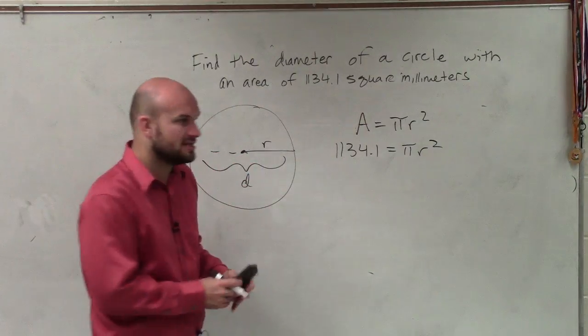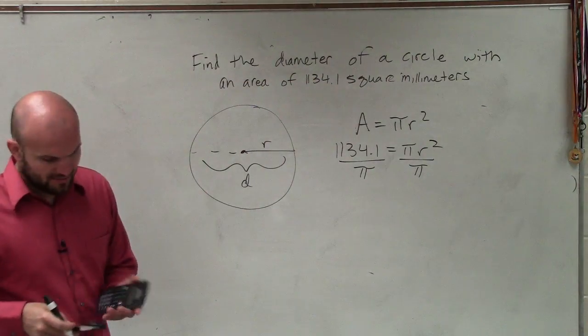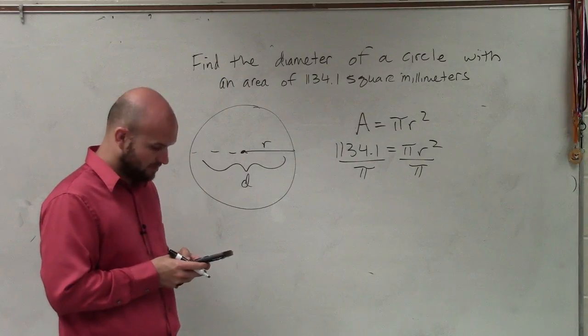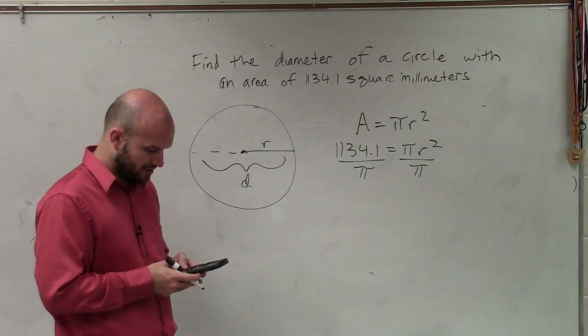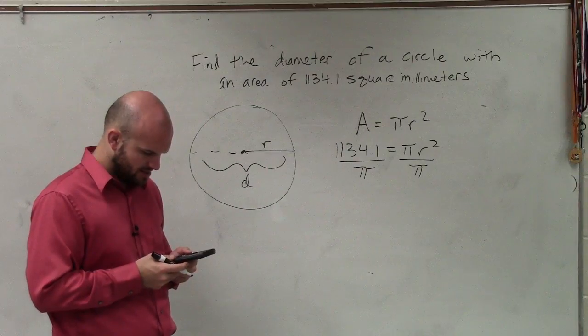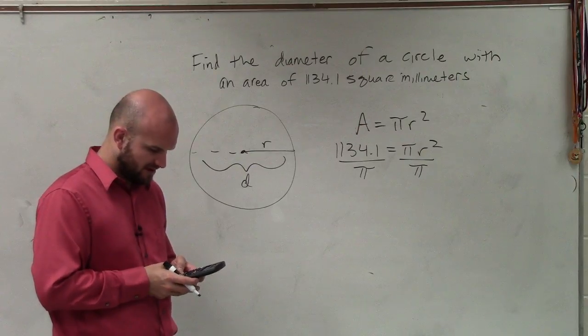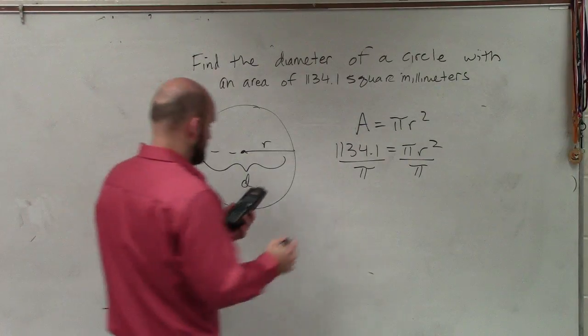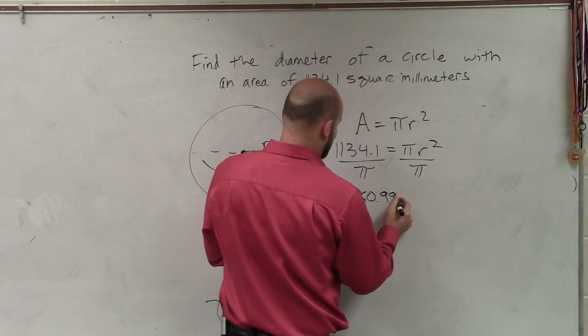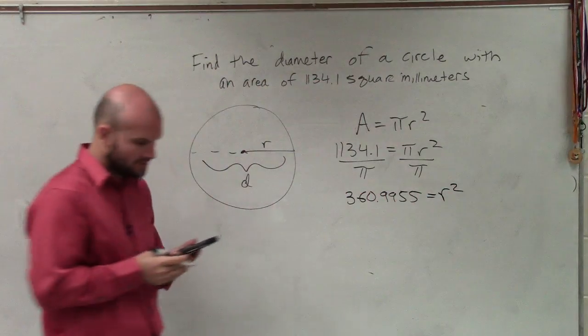Well, to do that, I need to isolate the r. So I'll divide by pi, so I take out my handy-dandy calculator, and I'll simply do 1,034.1 divided by pi. Do you not have pi? You can just insert it manually. OK. Well, I'll just do 3.14159. So that's 360.9955, I'm just going to write that, equals r squared.